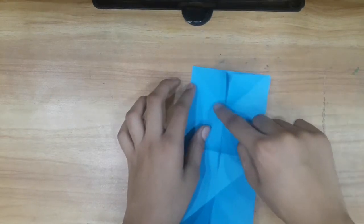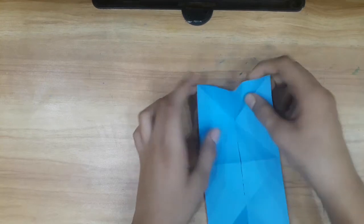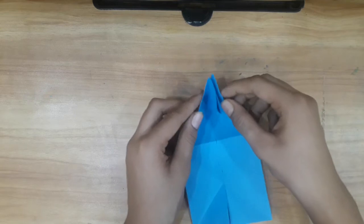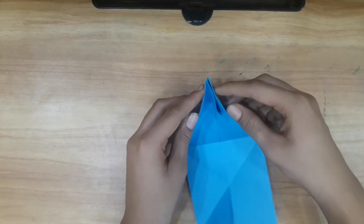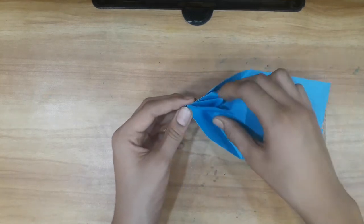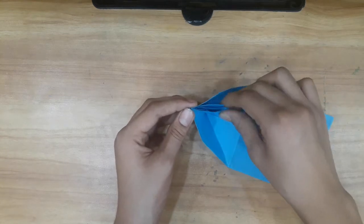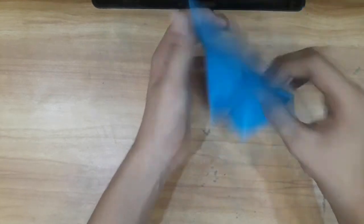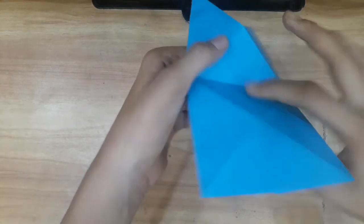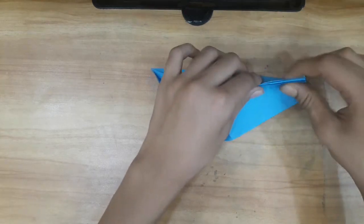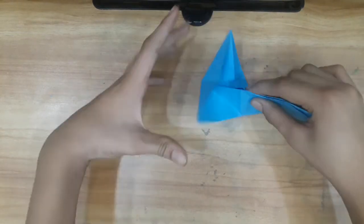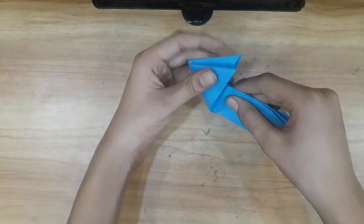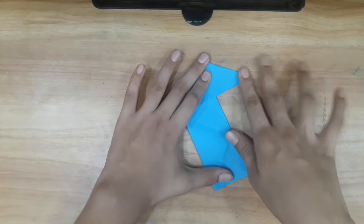Now you can see there is a V here, a V form. We have to take both sides and push them like this. So now the middle line, you have to press it. Then the middle line, this one, we have to do like this, so these two pieces are coming together like this, and we have done like this.